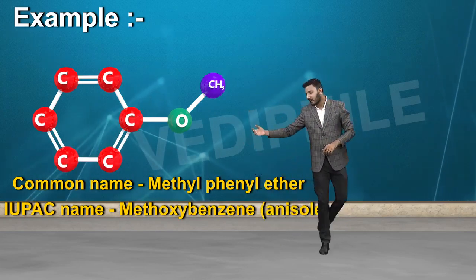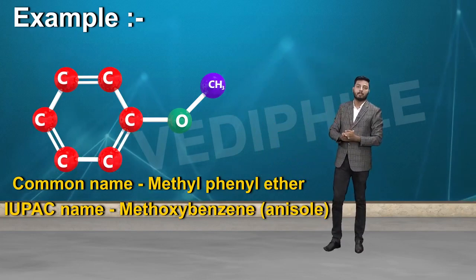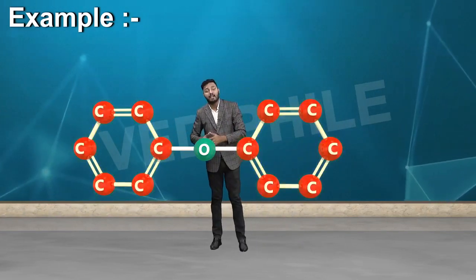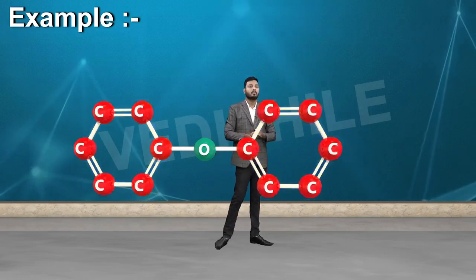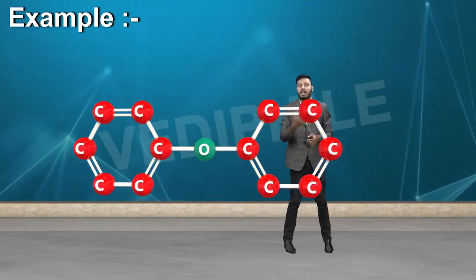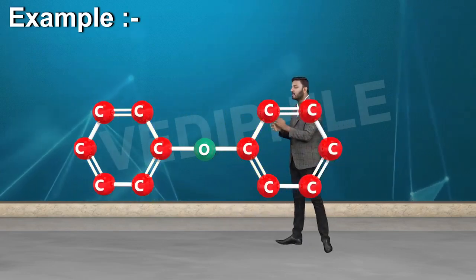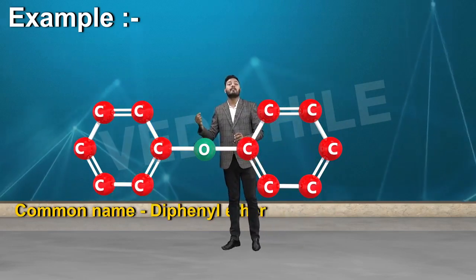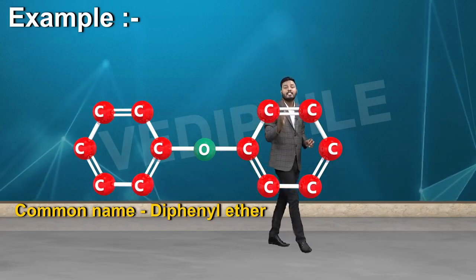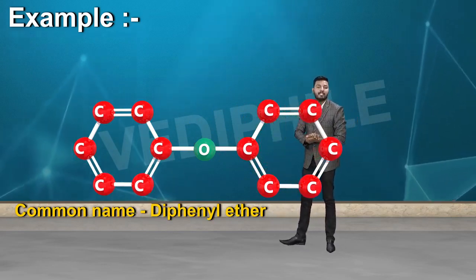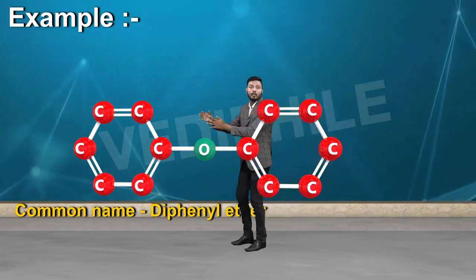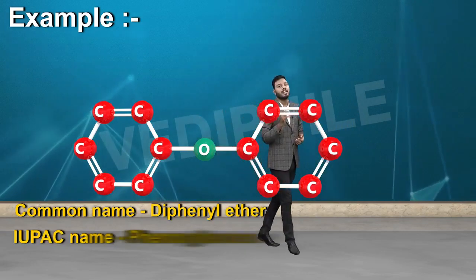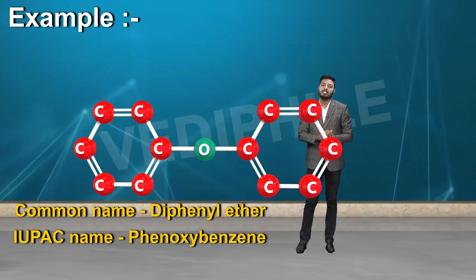अगर एक aryl part हो और एक alkyl part हो, यह बात clear हुई। अब अगर दोनों ही aryl part हों — oxygen के दोनों तरफ — तो उसका common name होगा diphenyl ether। और IUPAC name में एक को phenoxy बना देंगे और एक benzene होगा, तो IUPAC name होगा phenoxybenzene।